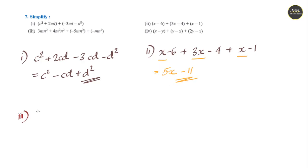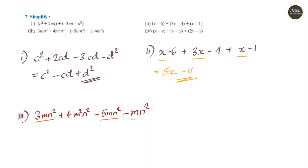Question 3: 3mn square plus 4mn square n square plus minus 5mn square minus mn square. Grouping like terms: 3mn square minus 5mn square is minus 2mn square; minus 2mn square minus mn square is minus 3mn square plus 4mn square n square. That is the answer.